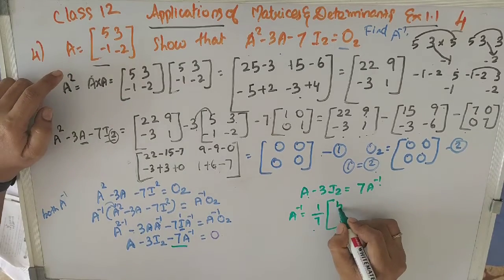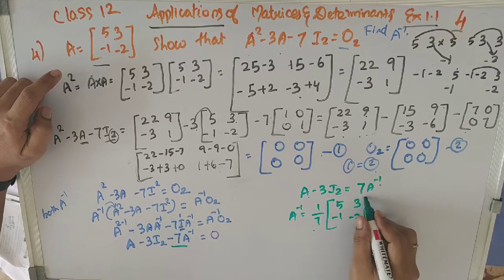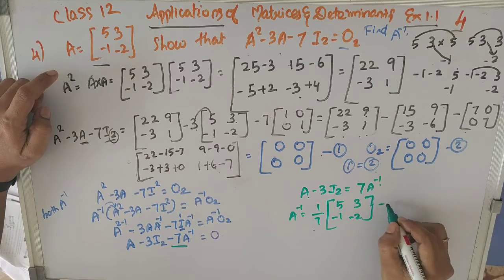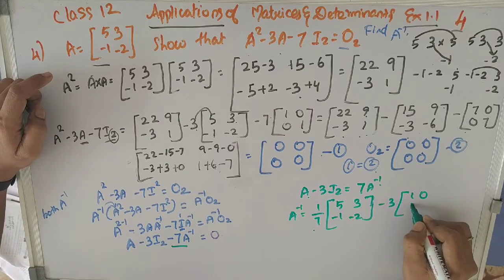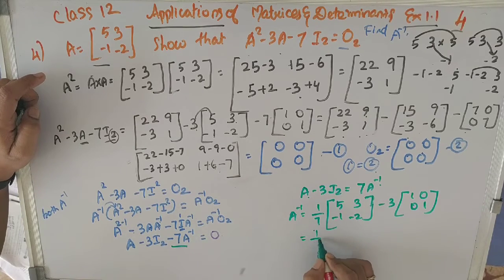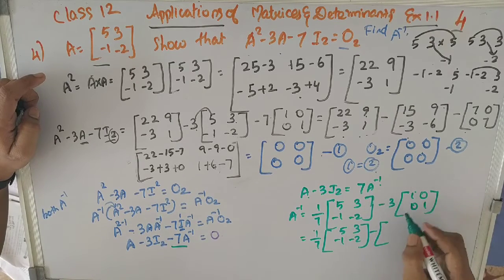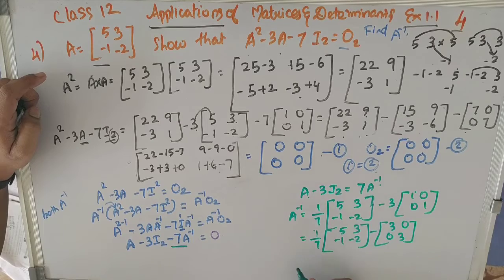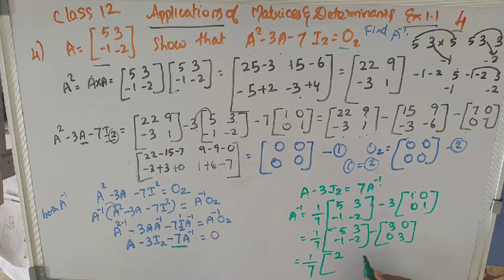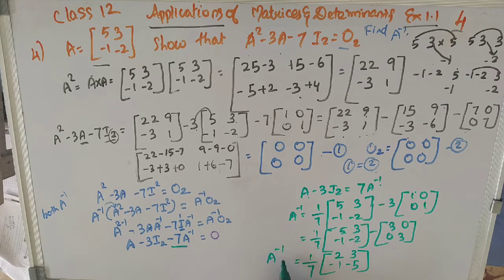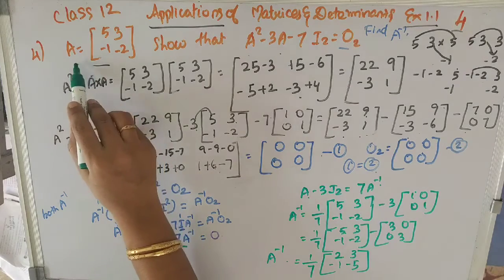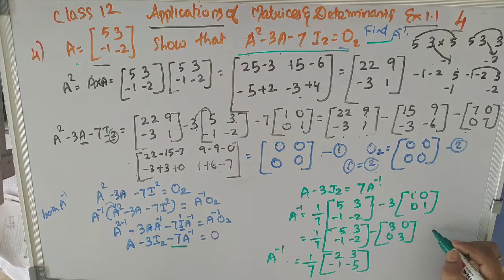Taking 7A⁻¹ to the other side: A minus 3I₂ equals 7A⁻¹, so A⁻¹ equals (1/7) times (A minus 3I₂). That is 1/7 into the matrix 5, 3, minus 1, minus 2, minus 3 times the identity 1, 0, 0, 1. Multiplying 3 inside gives 3, 0, 0, 3. Therefore A⁻¹ equals (1/7) times the matrix 2, 3, minus 1, minus 5.